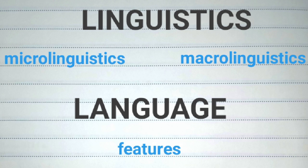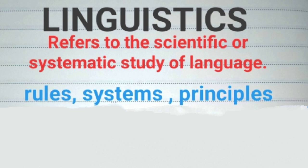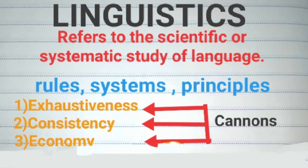So let's start. First, what is linguistics? Linguistics refers to the scientific or systematic study of language. It is a science in the sense that it scientifically studies the rules, systems, and principles of human languages, and it is guided by three canons: exhaustiveness, consistency, and economy.